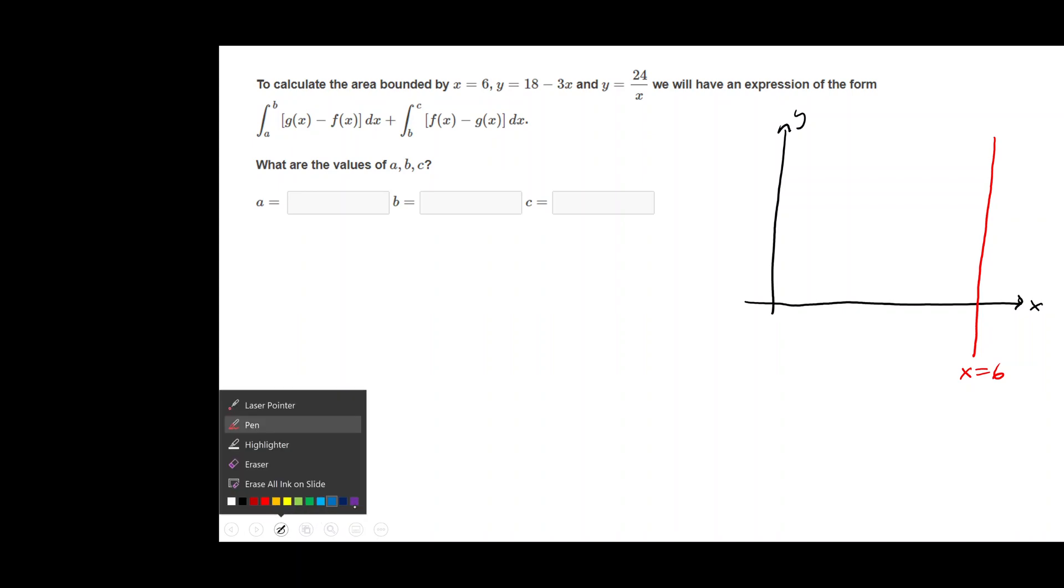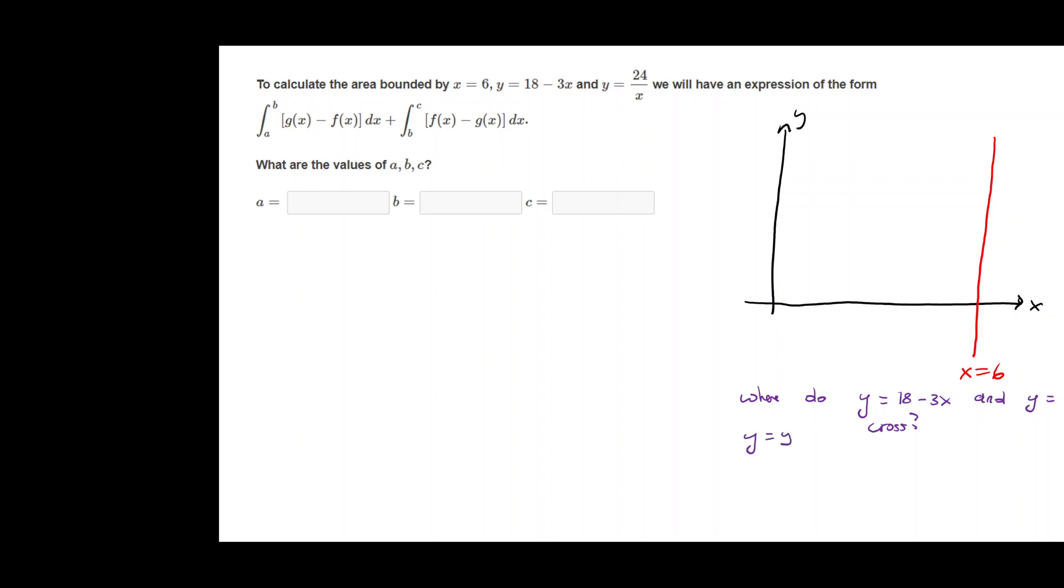Let's look for the points of intersection of the curves. Where do y equals 18 minus 3x and y equals 24 over x cross? So let's set them equal. 18 minus 3x is equal to 24 over x. We can cross multiply by x.